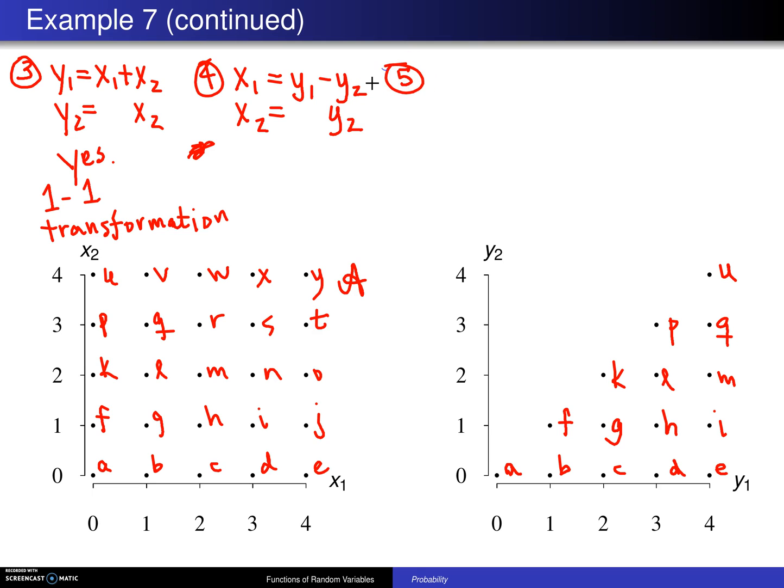Step five is to find the set script B. Well, script B is right over here—all of those dots consist of script B. So in this case, it is the set of all Y₁, Y₂ values such that Y₁ goes from 0, 1, 2, etc., and Y₂ will go from 0 up to whatever the Y₁ value is. So this goes 0 up to whatever Y₁ is. And there is script B, which is this triangular-shaped region.